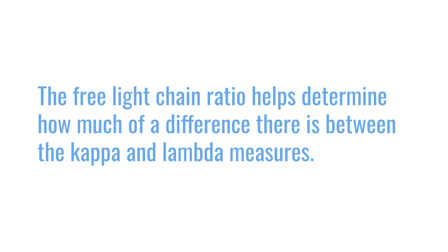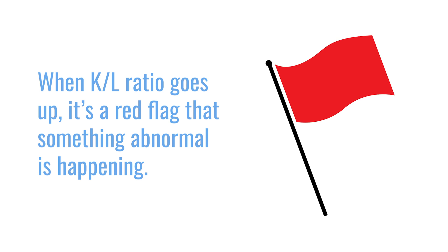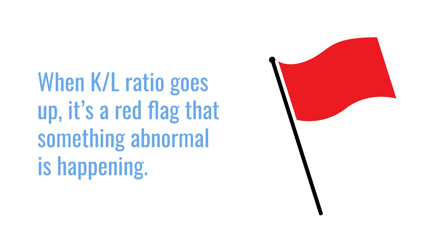A normal ratio of a light chain can range between 0.26 to 1.65, and that is something that everybody has. If both light chains go up at the same time, the ratio should stay the same. In a case like myeloma where a kappa light chain goes up, we should see that ratio go up, and that should signal us that there is a higher amount of cancer cells producing that abnormal type of light chain.